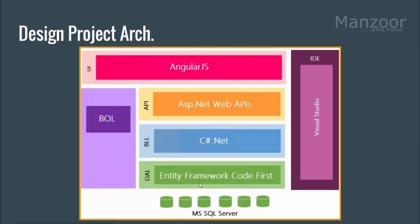Throughout all three layers I will be using my business objects — to pass data from the API to the business logic layer, and from the business logic layer to the data access layer. This service I am going to use in an AngularJS UI, so my UI will be AngularJS — that is the web client. All of this I will be implementing in Visual Studio 2015. So this is our basic architecture.